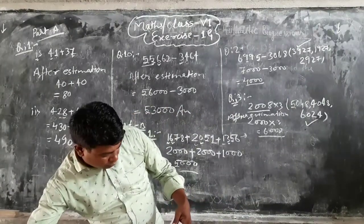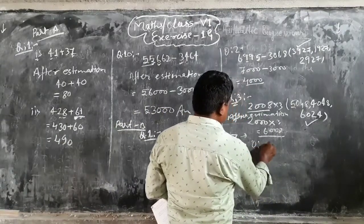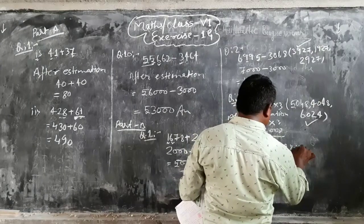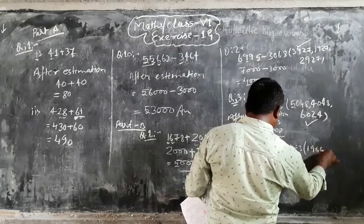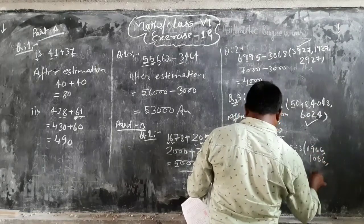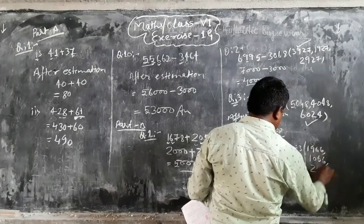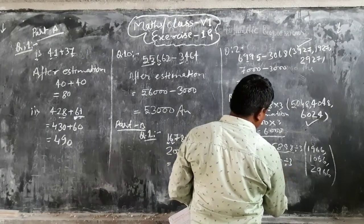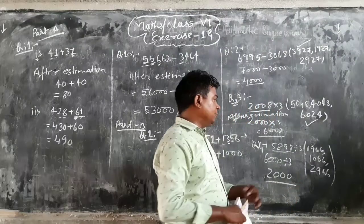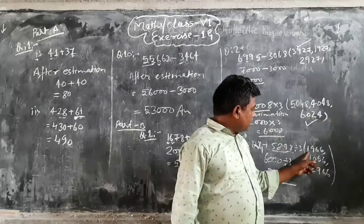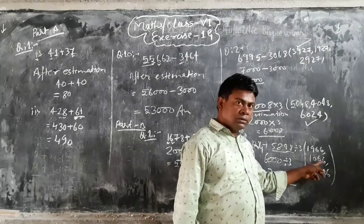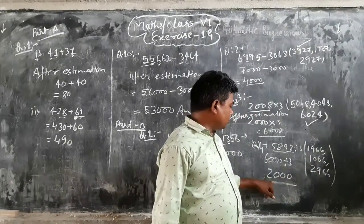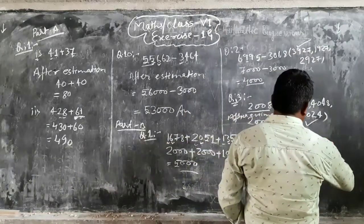And similarly, question number 4: 5,898 divided by 3. And the options are 1,966, 1,066, and 2,966. So this is 2,966. That means this is the correct option.